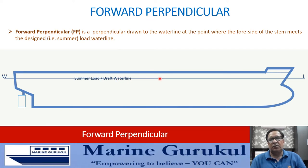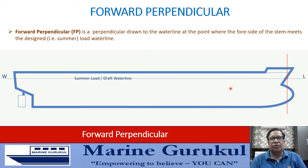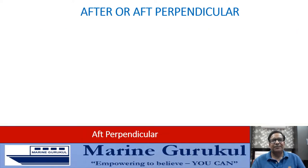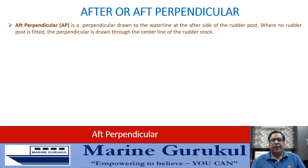Where the summer load waterline meets the forwardmost part of the stem is marked with a red dot. At this point, when we draw a perpendicular to the waterline — shown by the red line — at the forward end of the stem where the summer draft waterline cuts the stem, this perpendicular is called the forward perpendicular of the ship.